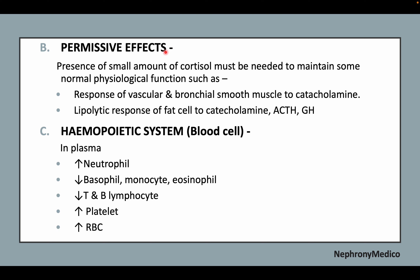Permissive effects include that a small amount of cortisol must be present to maintain normal physiological functions, such as the response of vascular and bronchial muscle to catecholamines, and the lipolytic response of fat cells to catecholamines, ACTH, and GH. In hematopoietic stem cells, there is an increase in neutrophils and RBCs, and reduced basophils, monocytes, eosinophils, and T and B lymphocytes.